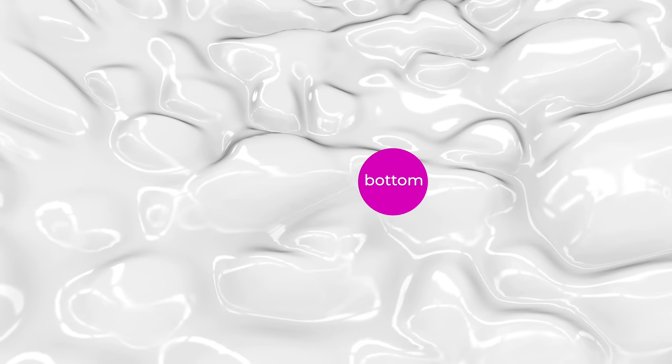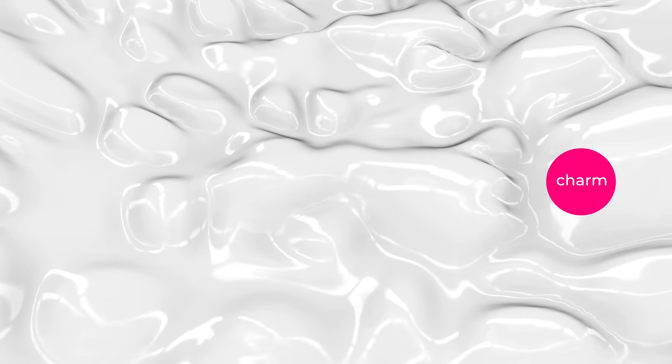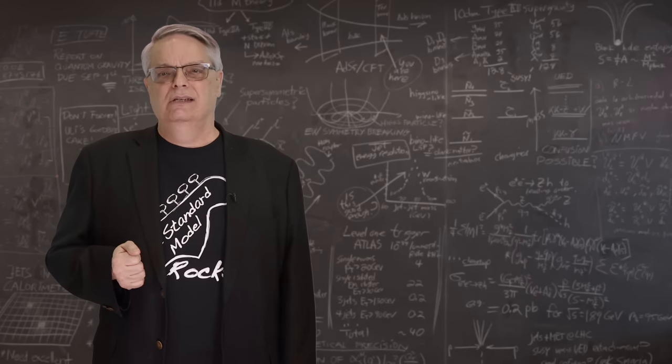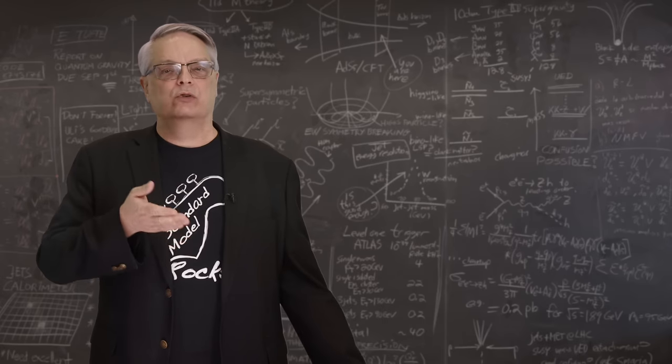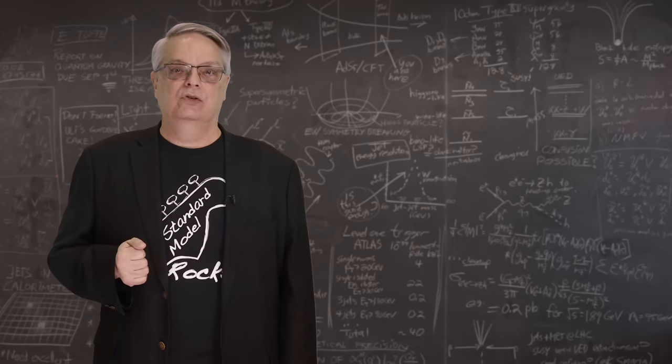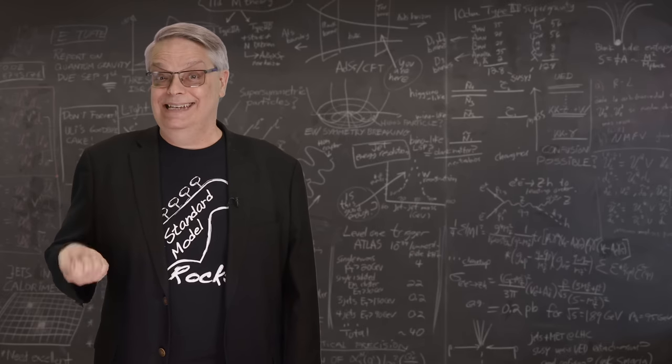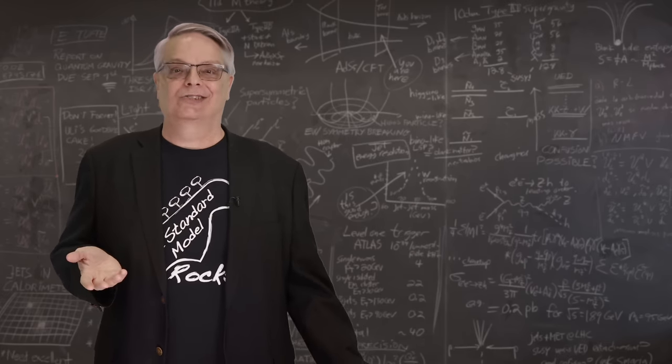When the bottom quark decays, it also spits out another W boson and becomes a charm quark. This identity-changing behavior is usually what scientists talk about when they discuss the weak force. It's not that the weak force doesn't push particles around like all forces do. It's that only the weak force can change particles' identities. So that's the thing we mentioned, because, come on, that's just kind of awesome, you know.